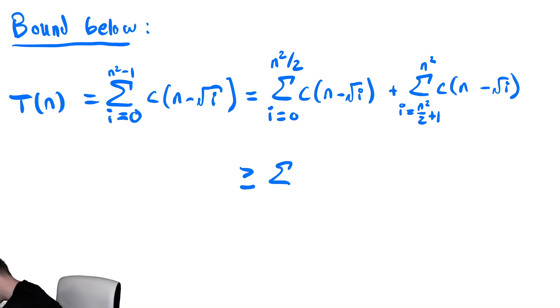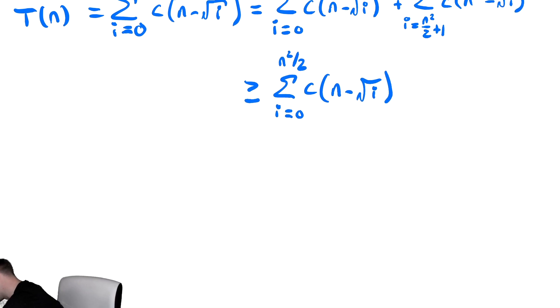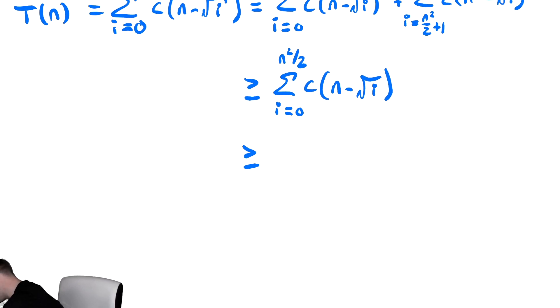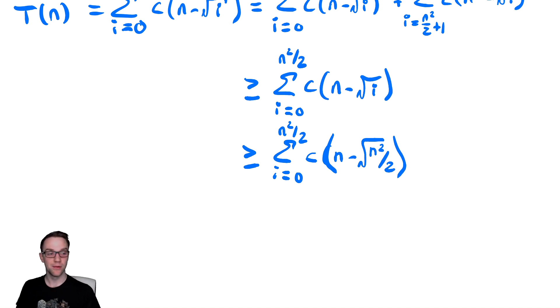So we have the sum from i equals 0 to n squared divided by 2 of c n minus radical i. And then we would plug in a value of i. Here we're going to plug in the top bound. Because it's decreasing, a larger value of i makes it smaller. So to make it as small as possible within that range of values, we replace i with n squared over 2, the largest value. And now we've removed i from the problem.